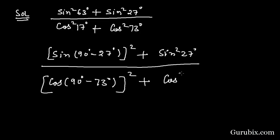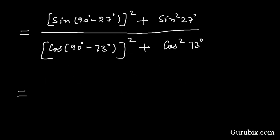Since sine(90° - θ) equals cos(θ), it will be cos²27° + sine²27° in the numerator.